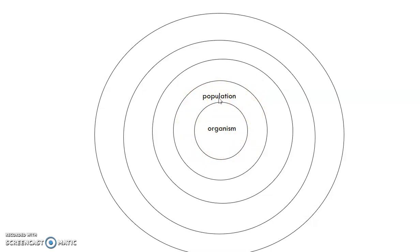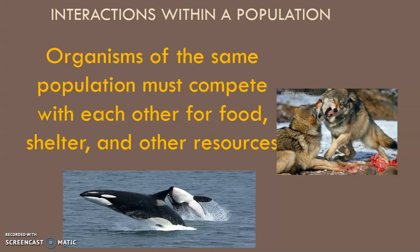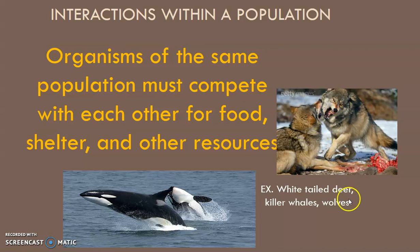Interactions within a population: organisms of the same population must compete with each other for food, shelter, and other resources. Examples would be wolves fighting for food, or killer whales fighting for space or food. These interactions can make populations increase or decrease, and we'll talk more about that.